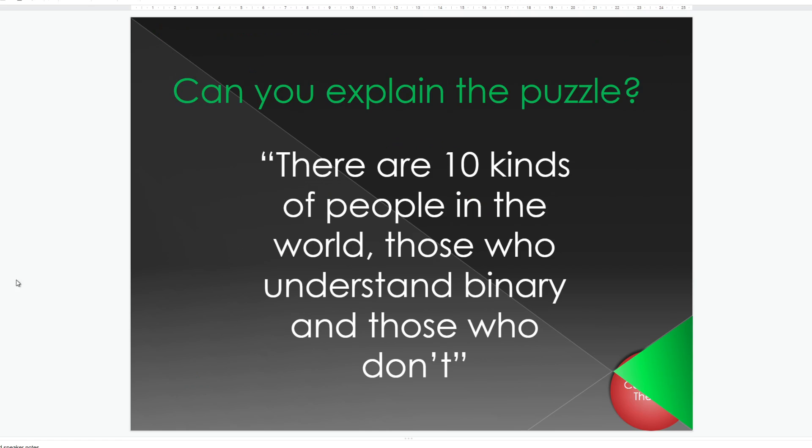And then finally, we'll come back to this puzzle. There are 10 kinds of people in the world. Those who understand binary and those who don't. Now, with your understanding of binary now, we can look at this and go, right, that's a zero under the one and a one under the two. So, it's actually saying there are two types of people in the world. Those who understand binary and those who don't.